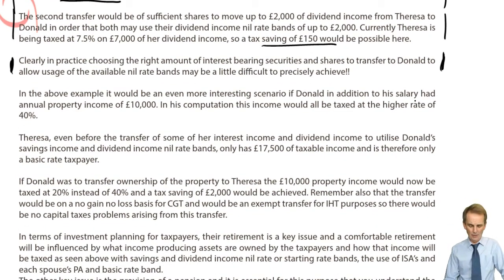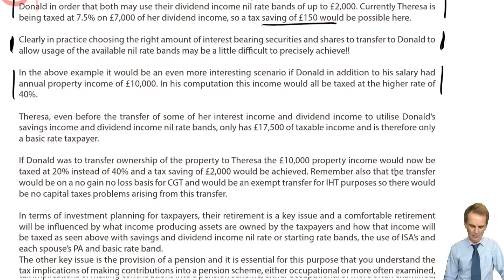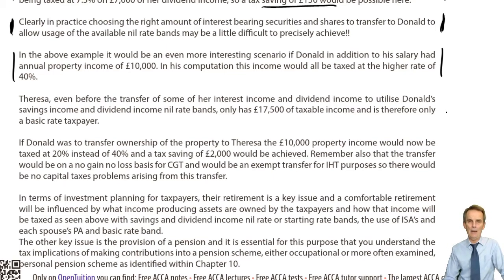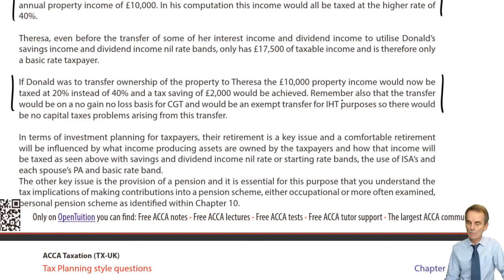We make the point from the previous lecture: what if Donald, in addition to his salary, had some property income currently being taxed at 40% as he's a higher rate taxpayer? We could move some — indeed possibly all — of that across to Teresa, because she has a significant amount of unused basic rate band still available. Those are the points we are fully familiar with, and we've made the point about the advantages to be achieved.